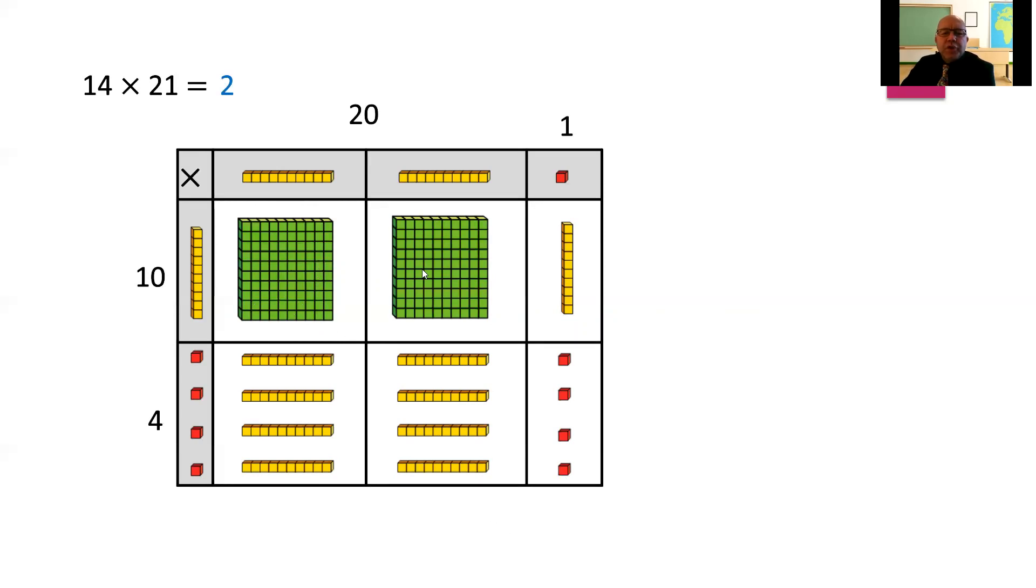So everything in the white area there all together will give us our answer. So we've got 2 hundreds. We've got 1, 2, 3, 4, 5, 6, 7, 8, 9, 10 tens. And we've got 4 ones. So all together, 14 multiplied by 21 is 294. I hope that makes sense. All right, let's move on.